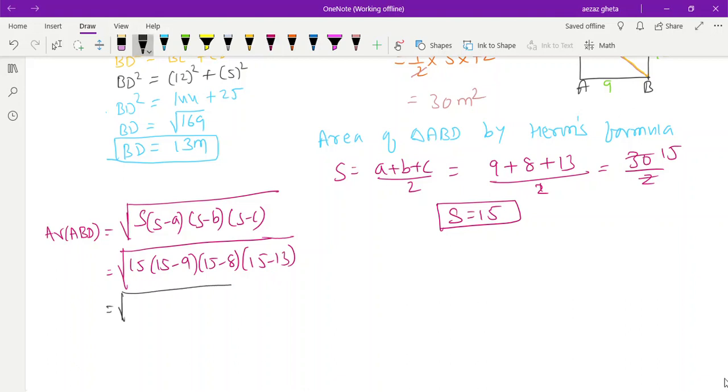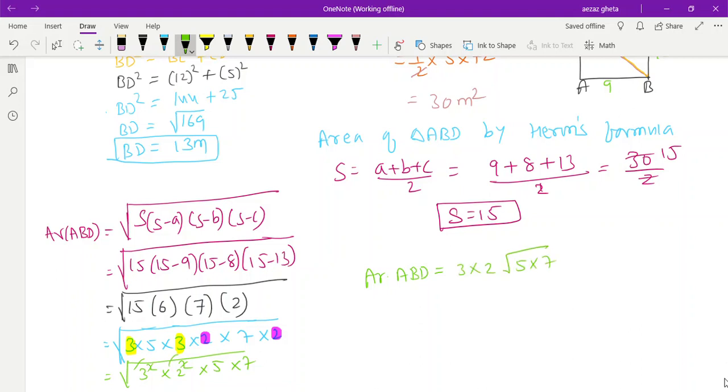We will get √(15 × 6 × 7 × 2). 15 can be written as 3 × 5, 6 as 3 × 2, 7 as is, 2 as is. This 3 and this 3 become 3², this 2 and this 2 become 2². You can write 3² × 2² × 5 × 7. Area of ABD = 3 × 2 × √(5 × 7) = 6√35.